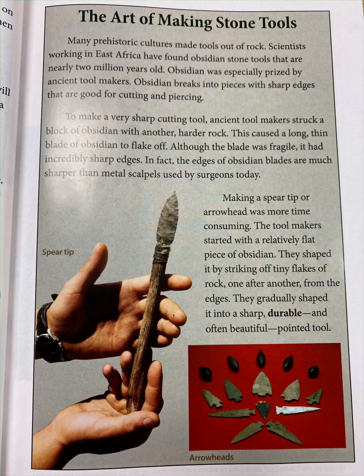Many prehistoric cultures made tools out of rock. Scientists working in east Africa have found obsidian stone tools that are nearly two million years old. Obsidian was especially prized by ancient tool makers because it breaks into pieces with very sharp edges good for cutting and piercing. To make a sharp cutting tool, ancient tool makers struck a block of obsidian with another harder rock, causing a long, thin blade of obsidian to flake off.